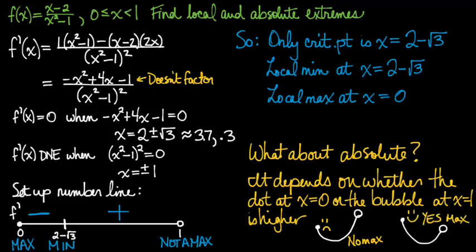Here's the other possibility where the dot is higher than the bubble. You can see that the dot is the very highest height there is. So yes, there is an absolute max. So what I need to do is figure out whether f of 0 or f of 1 is higher.